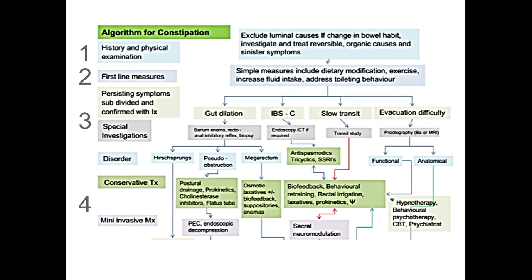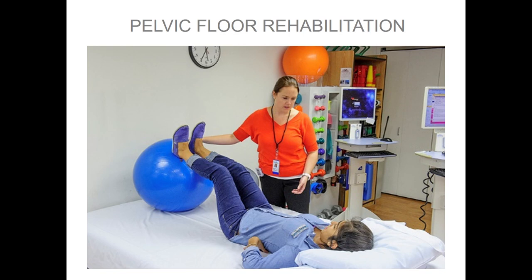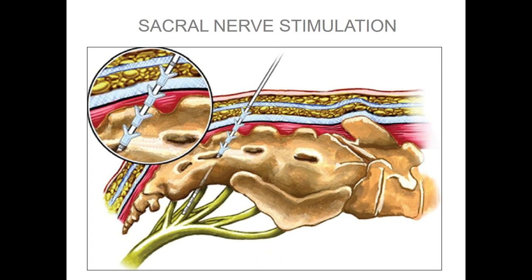Let me come back to our algorithm — now it's easier to understand. Number one: history and physical examination. Number two: treat with first-line measures. Number three: patient comes back, go for special investigation. Number four: you now know more about the reason behind and can treat your patient more appropriately — recommend medication like laxatives or irrigation, send for rehabilitation if they have dyssynergy or for biofeedback, or maybe use sacral nerve stimulation.